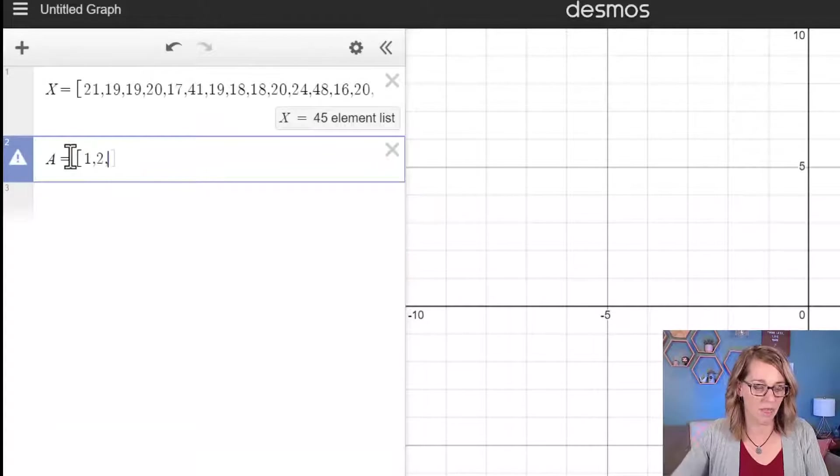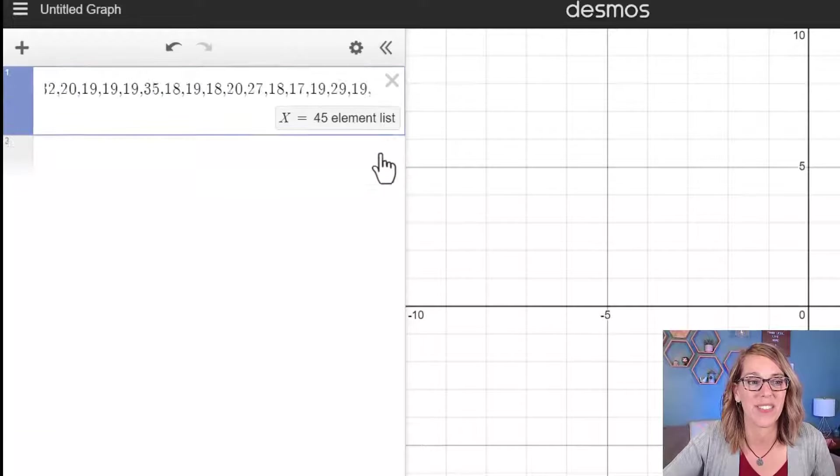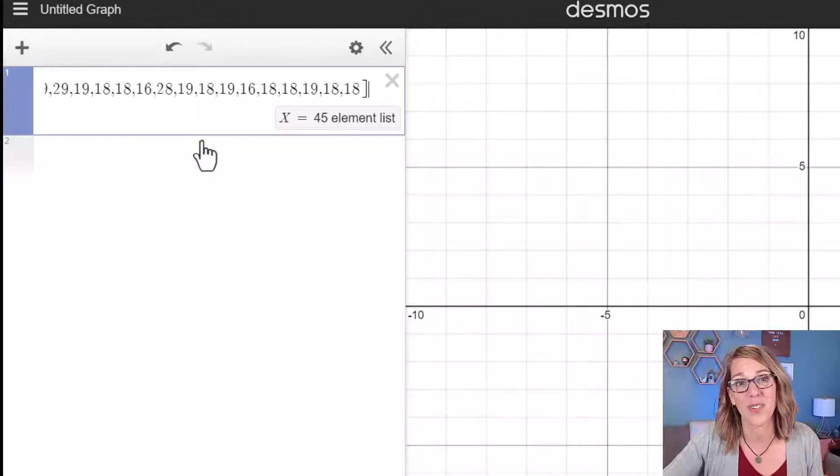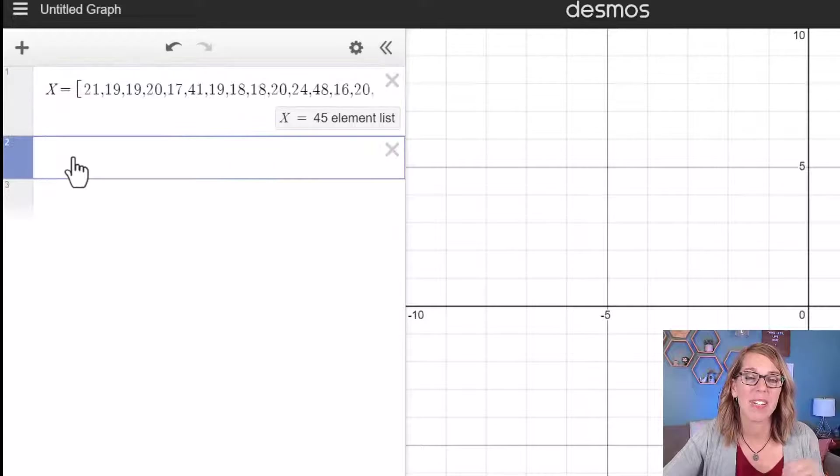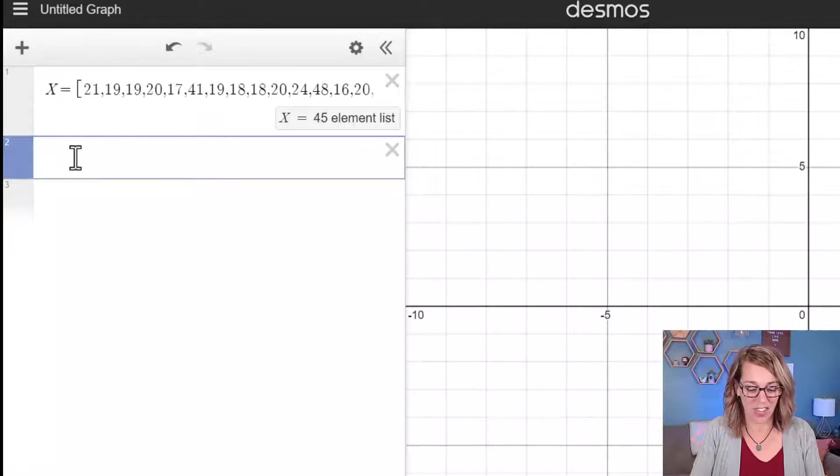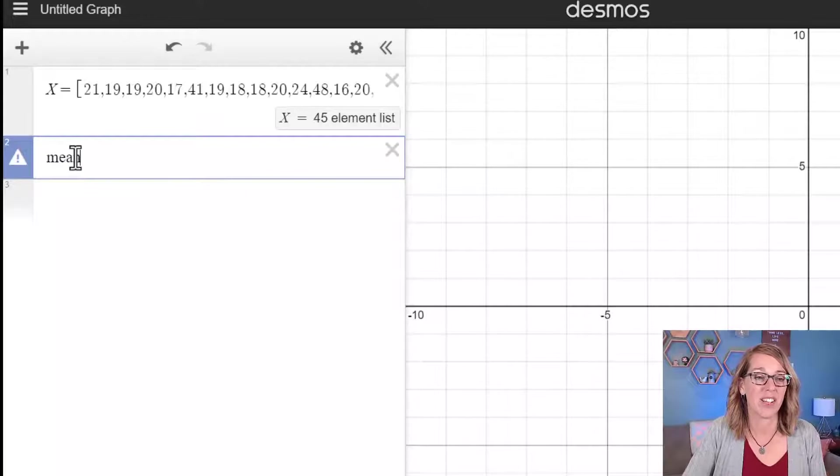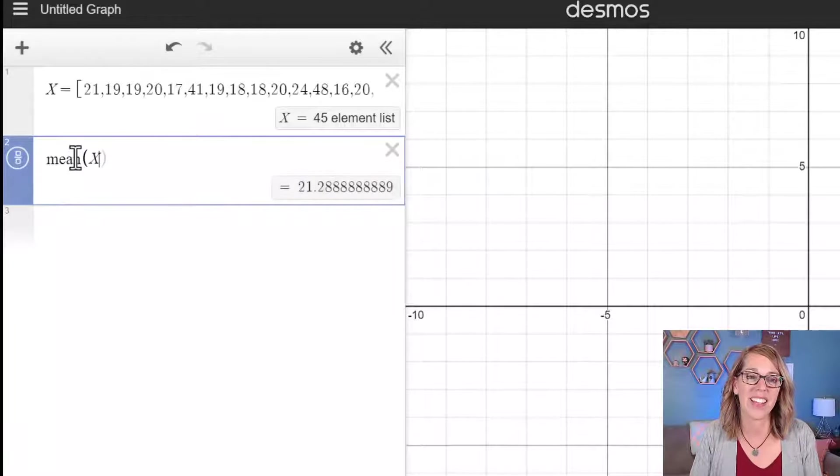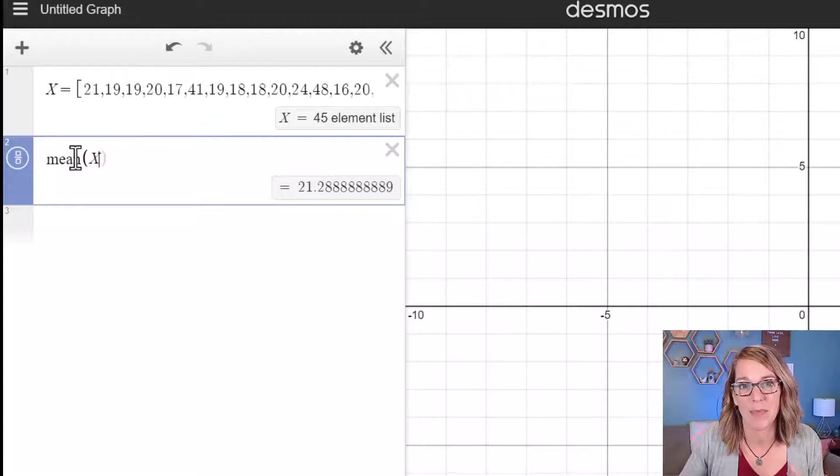I'm going to get rid of that because I want to compute some measures with my ages. I'm going to click on an empty cell and I can start to type in measures such as the mean. So I can do mean parentheses X and it gives me my mean as a decimal.